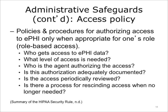The Security Rule requires a covered entity to implement policies and procedures for authorizing access to EPHI only when such access is appropriate based on the user's or recipient's role within the organization. Written policies should be created, then endorsed by management, to explain the process for granting access to EPHI. This includes establishing, documenting, reviewing, and modifying a user's right of access, including termination of said access. This policy or group of policies should adequately address: who gets access to EPHI data; what level of access is needed; who is the agent authorizing the access and is this authorization adequately documented; is the access periodically reviewed; and is there a process for rescinding access once it's no longer needed?